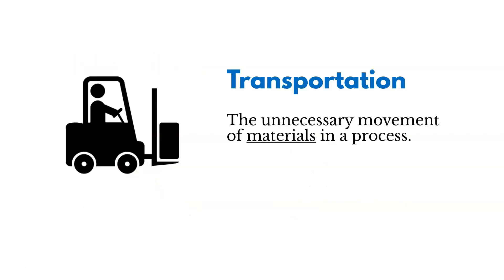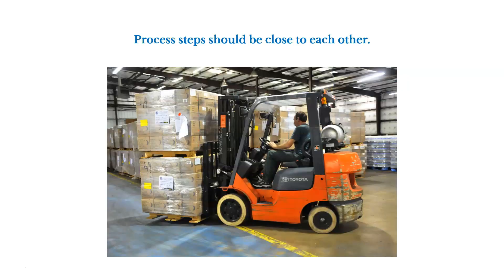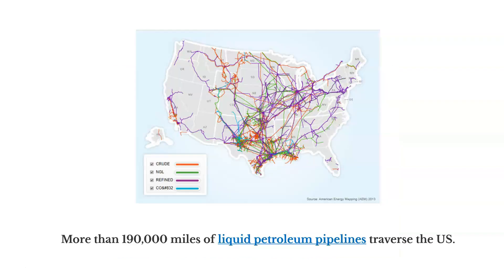Now let's talk in more detail about transportation — the first type of waste: the unnecessary movement of materials in a process. If we have to move things around too much, it's time wasted that could be spent doing better things. We should try to have process steps positioned close to each other so there's less movement required. There are more than 190,000 miles of liquid petroleum pipelines across the U.S. — we should ask whether there's a more efficient path and minimize the waste of transportation.